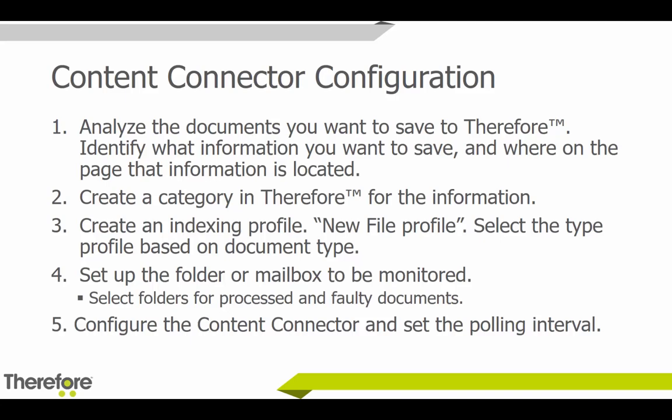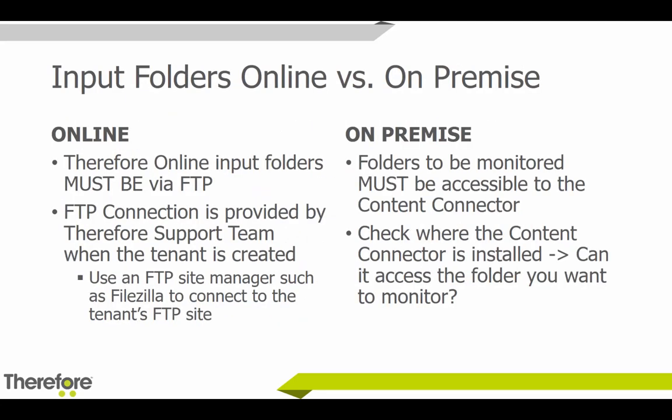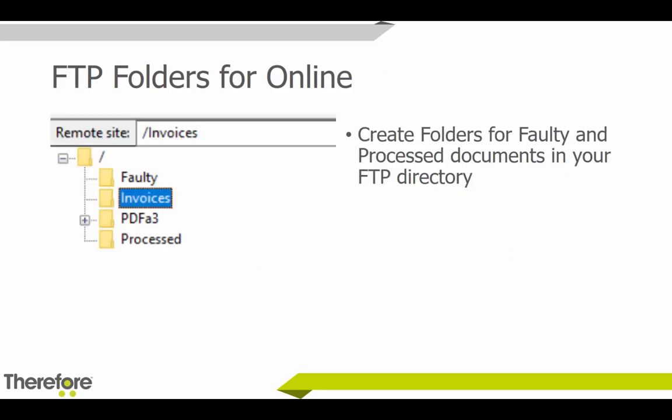One important difference to note is input folders — where the information is coming from originally. When using Therefore Online, input folders must be via FTP. The FTP connection is provided by the Therefore support team when the tenant is created, and you can use an FTP site manager such as FileZilla to connect to the tenant's FTP site. For on-premise systems, the folders must be accessible to the Content Connector, so always check whether the Content Connector can access the folder you want to monitor. Here's a simple screenshot of the FTP folder — you can see a folder for invoices with faulty and processed subfolders.